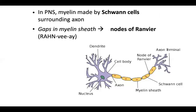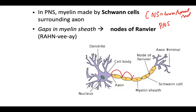The central nervous system is the brain and spinal cord, and the peripheral nervous system is everything else. In the peripheral nervous system, the myelin sheath — that lipid layer — is made by Schwann cells that surround the axon. The gaps in the sheath speed up the impulse because the impulse jumps over the myelin and hops to the next node of Ranvier.